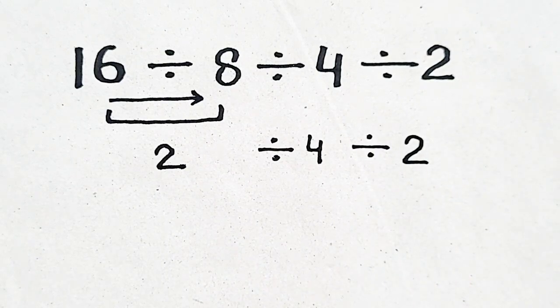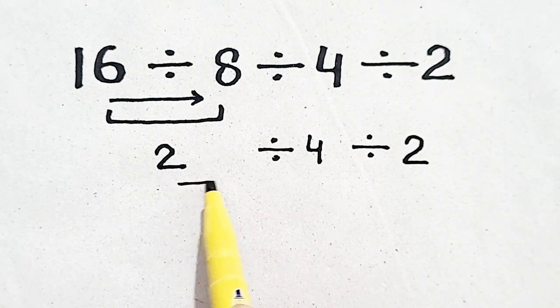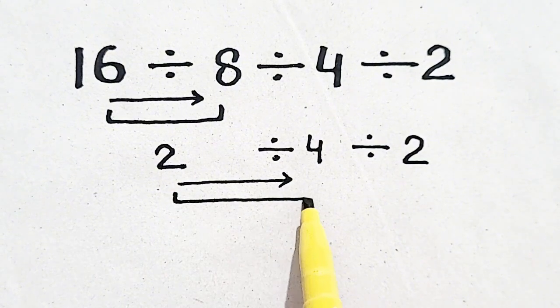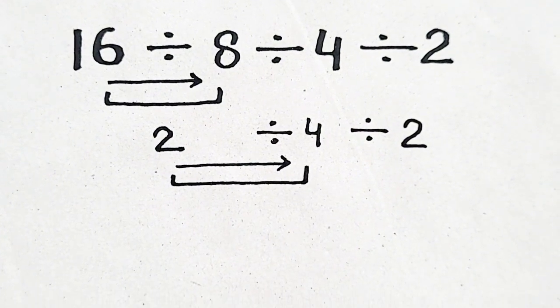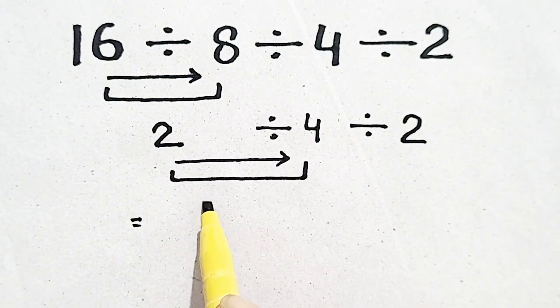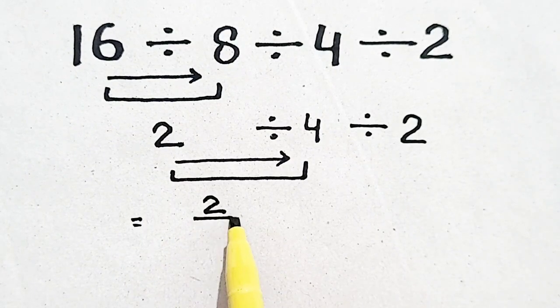No change. Now again, we have to move from left to right, so we have to solve 2 divided by 4. Mean, 2 divided by 4 can be written in a new way.